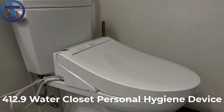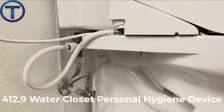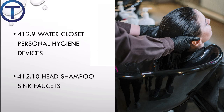412.9 gives standards for water closet personal hygiene devices — another term for toilet seat bidets — the high-tech devices we discussed earlier. 412.10 covers head shampoo sink faucets, again limiting temperature to 120 degrees to avoid scalding the scalp. 412.11 gives information about pre-rinse spray valves in commercial food service and the standards for those.